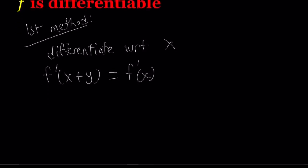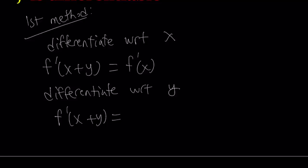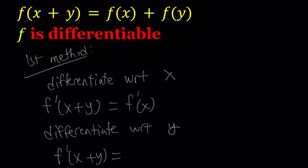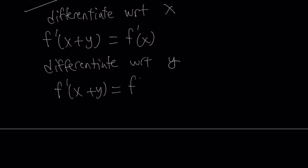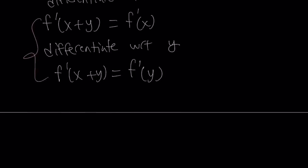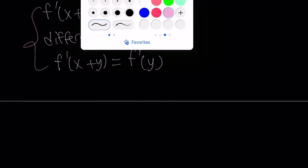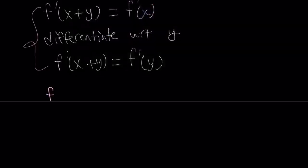Now let's differentiate with respect to y. We have a nice symmetry here — the left hand side is again f'(x+y), and the right hand side becomes f'(y) since x is now treated as a constant. Notice that the left hand sides of both equations are equal, so the right hand sides must also be equal, giving us f'(x) = f'(y).